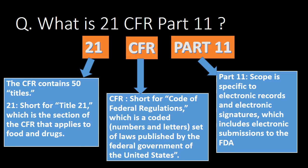Now, what is 21? The CFR has a total of 50 titles, and 21 is short for Title 21, which is the section of CFR that applies to food and drugs and directly applies to our pharmaceutical industry. Part 11 is from 21 CFR, and its scope is applicable specifically to electronic records and electronic signatures, which includes electronic submissions to the FDA.